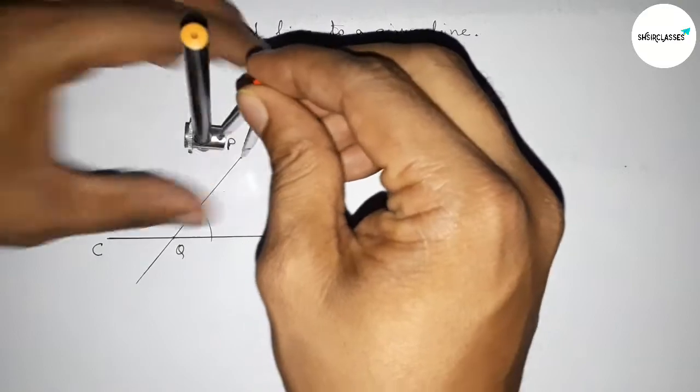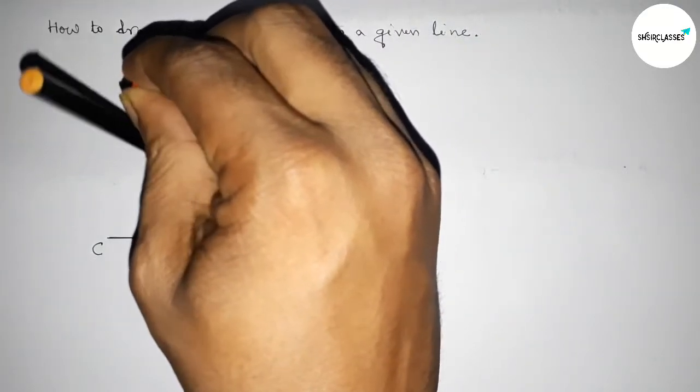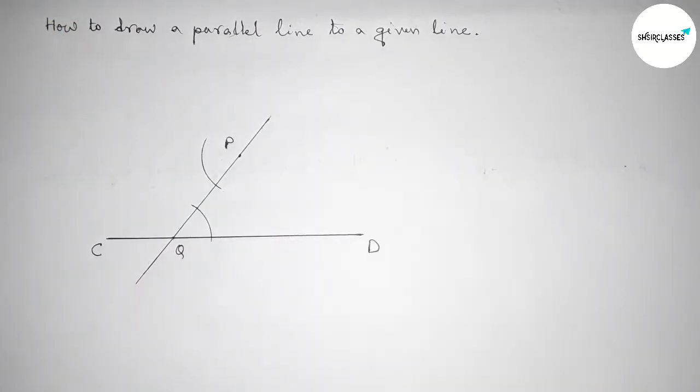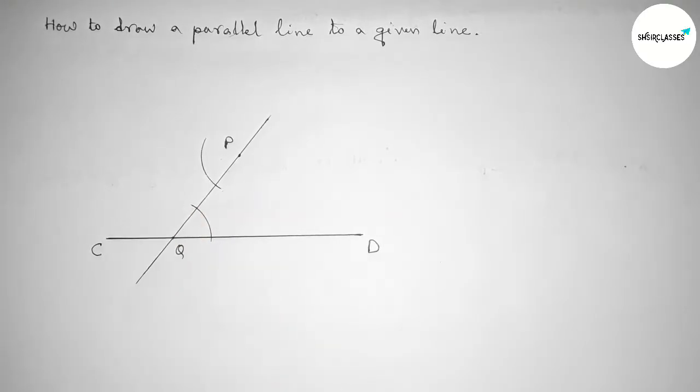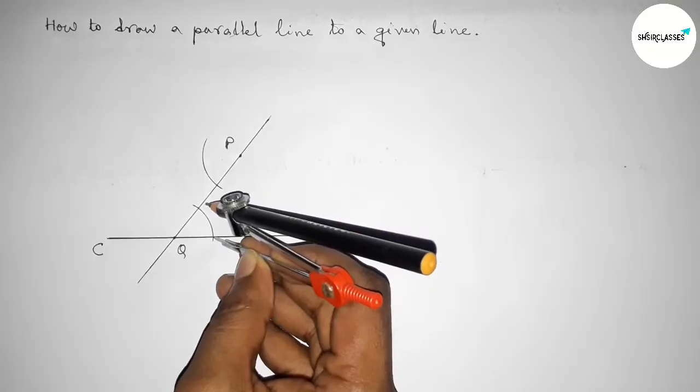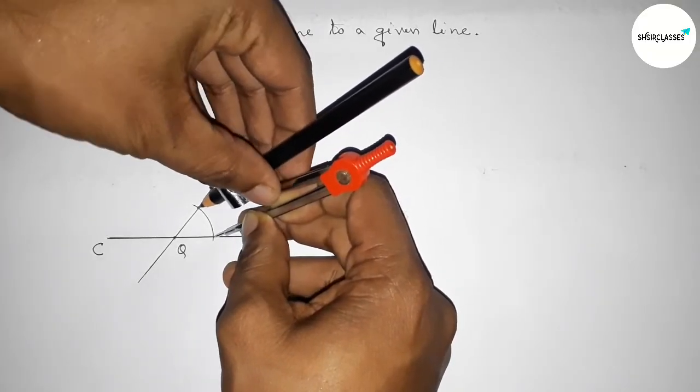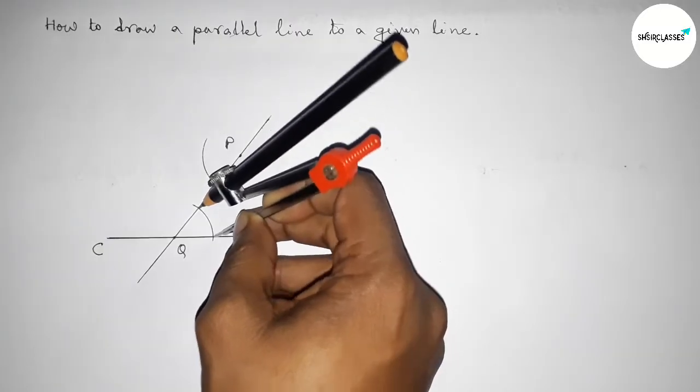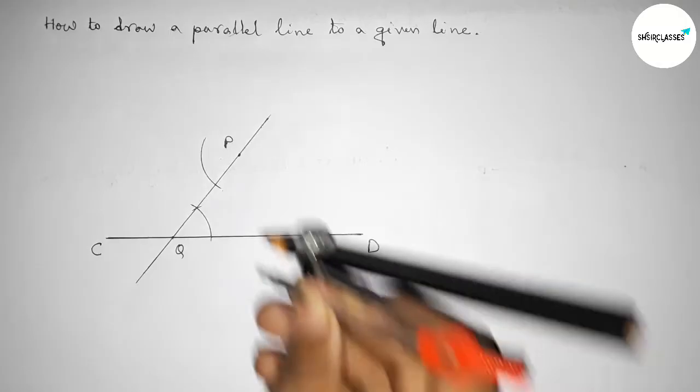Next we have to take the length from this to this. So by using compass, now taking this length by this way, and now putting the compass here and cut here.